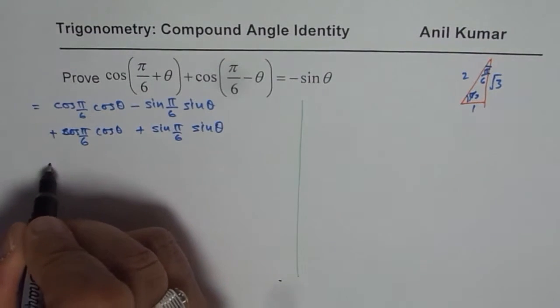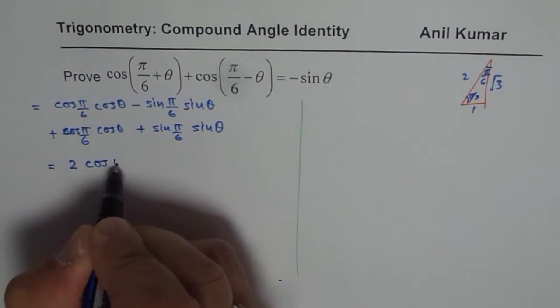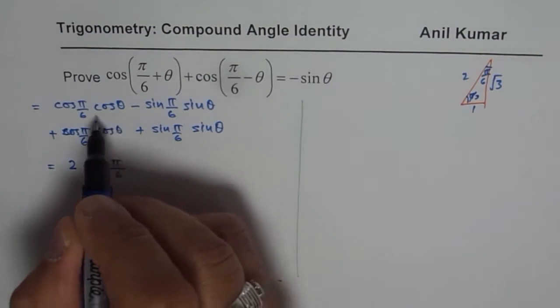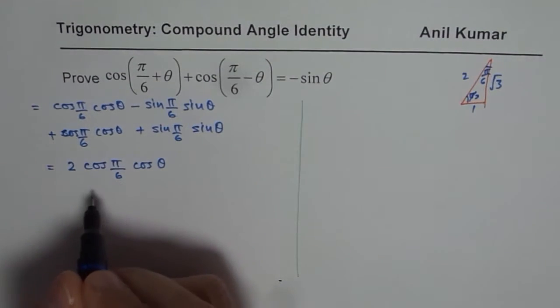When you add these, you get 2 times cos pi by 6 cos theta. That is the general expression.